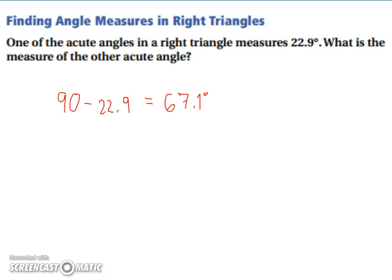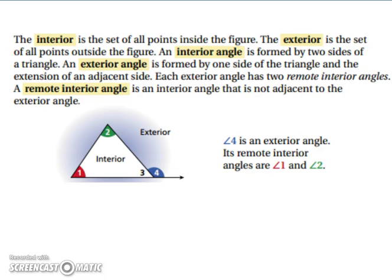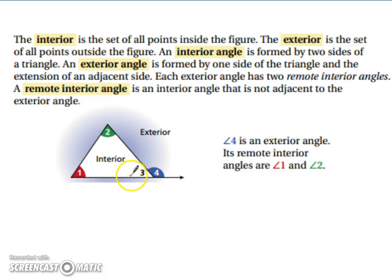Let's look at a few more vocabulary terms. The interior is the set of all points inside the figure. The exterior is the set of all points outside the figure. An interior angle is formed by two sides of the triangle, and an exterior angle is formed by one side of the triangle and an extension of an adjacent side. Angle 4 is an exterior angle, whereas angles 1, 2, and 3 are interior angles. A remote interior angle is an interior angle that is not adjacent to the exterior angle. So angle 4's remote interior angles are angles 1 and 2.